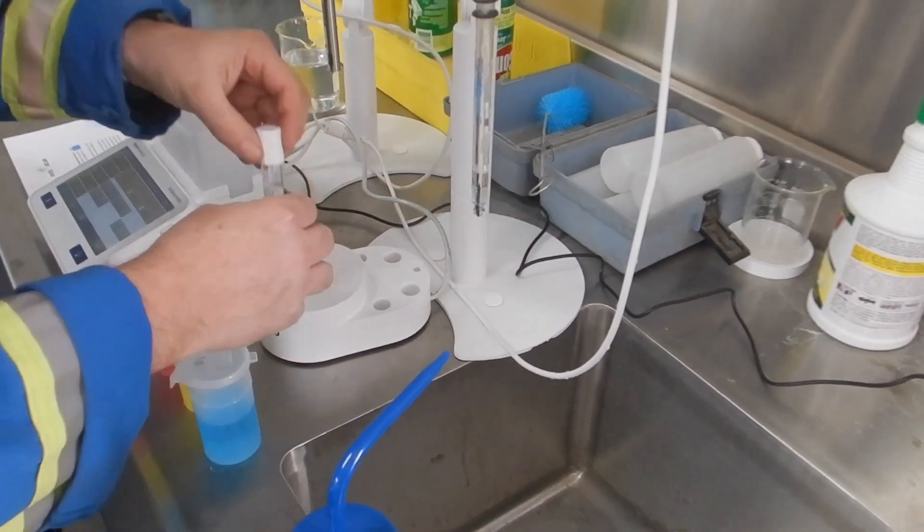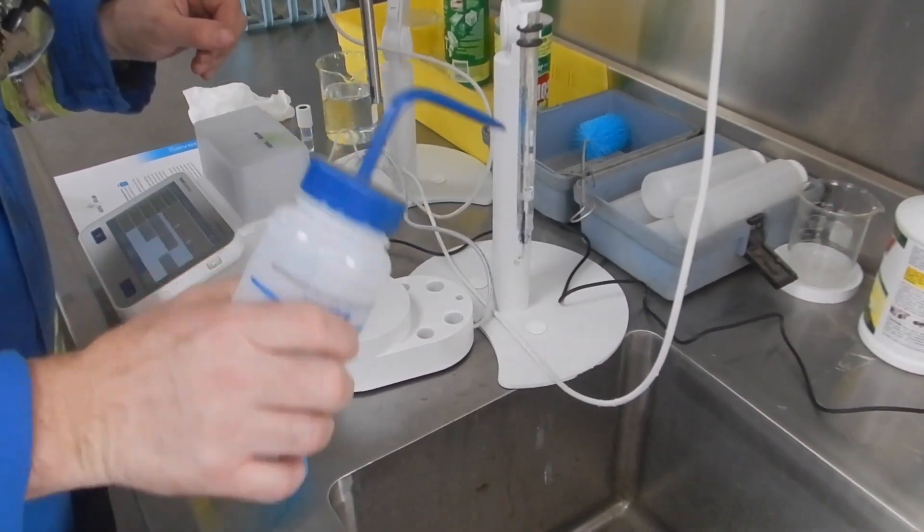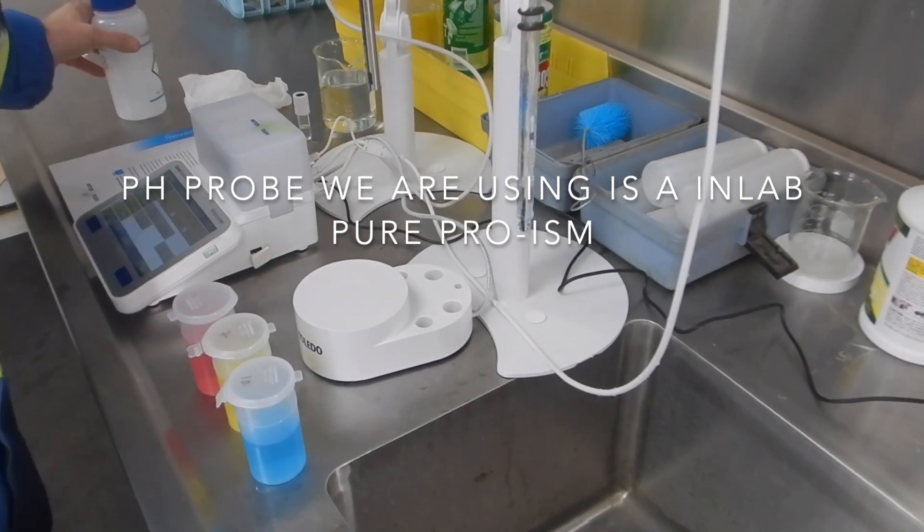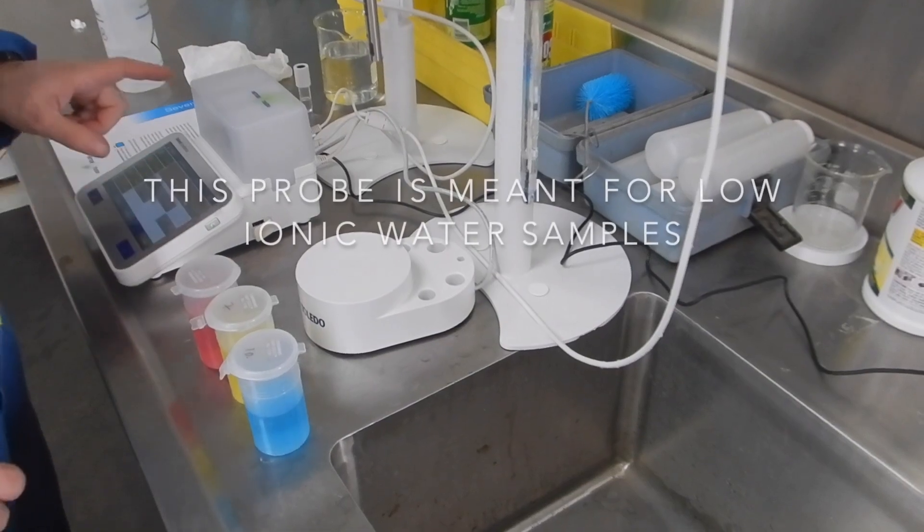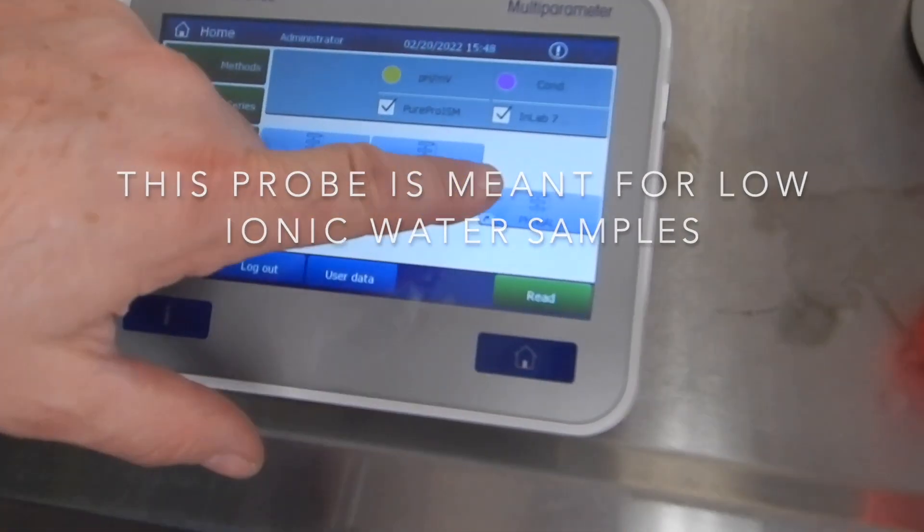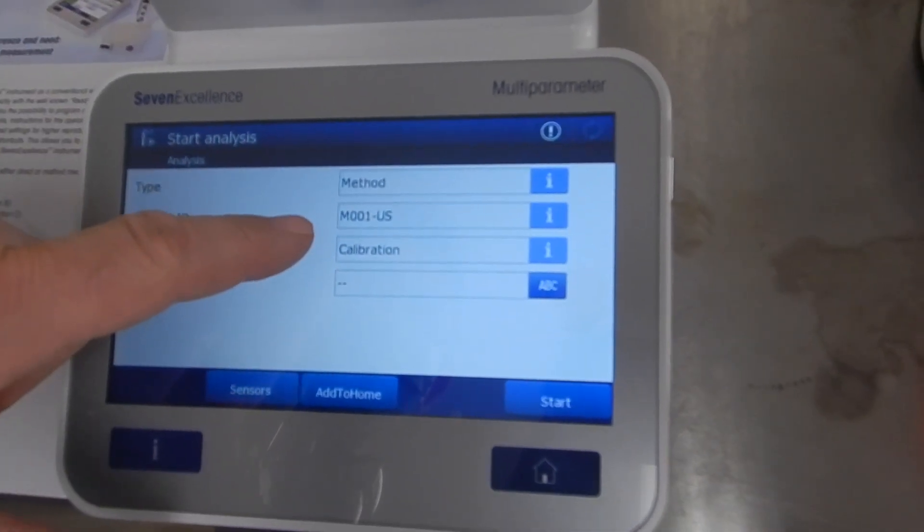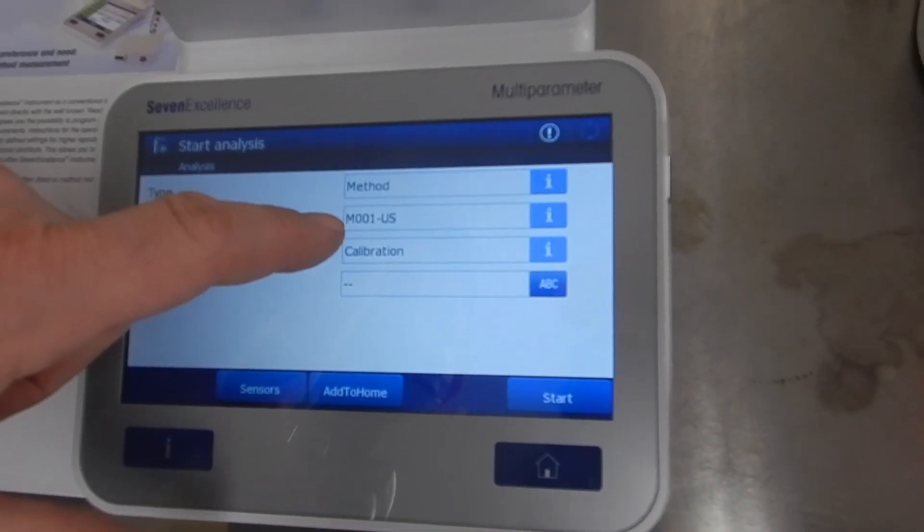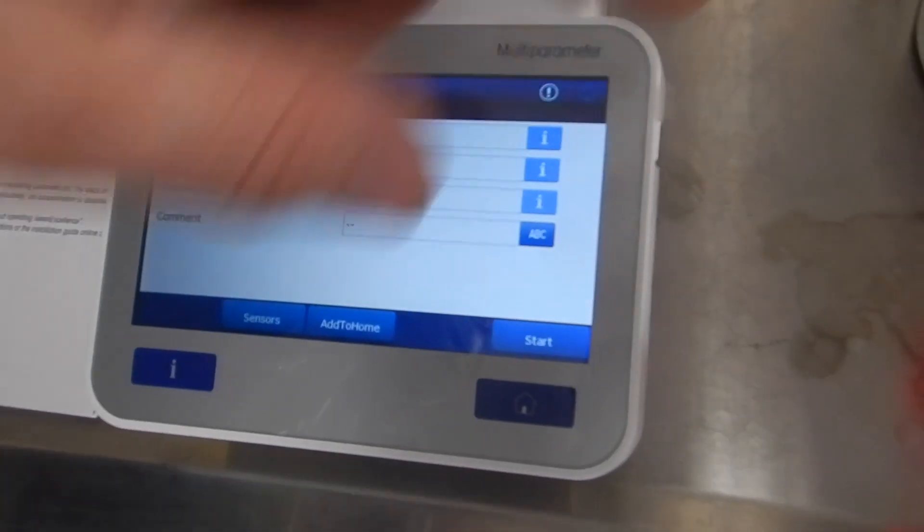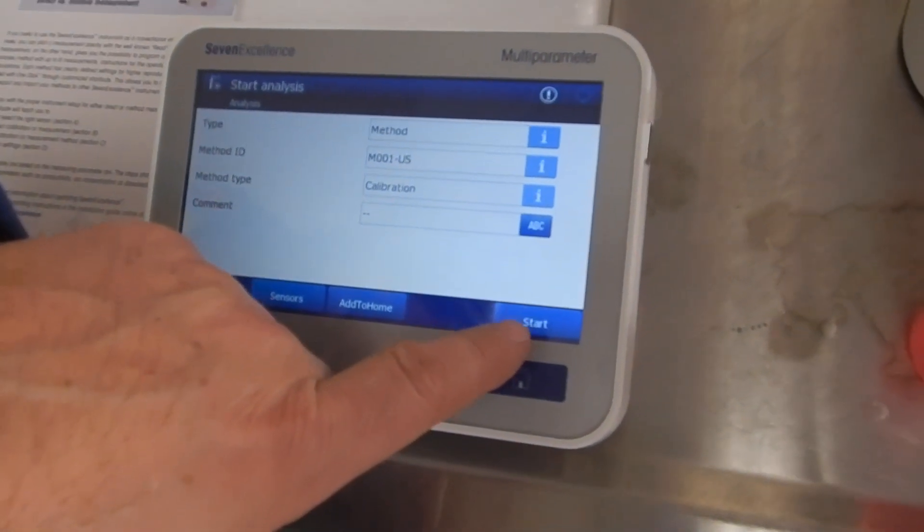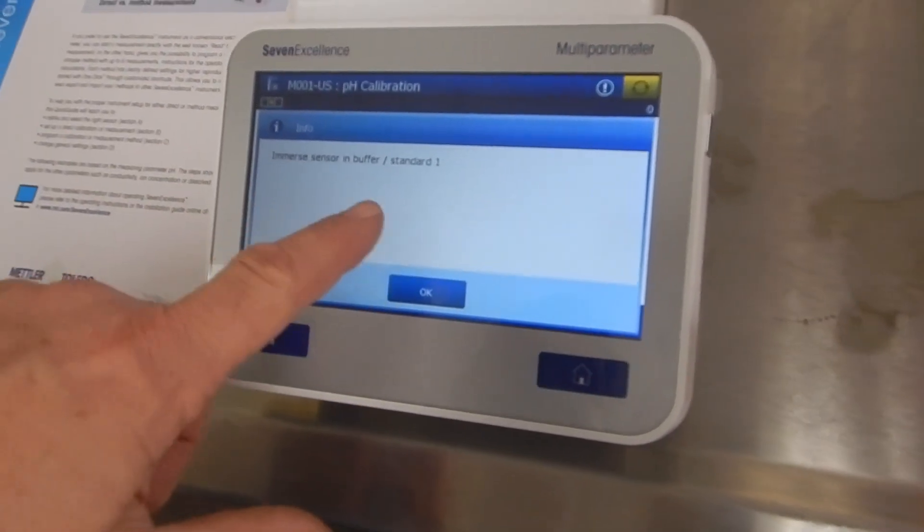Keep the probe moist and in good condition. Rinse it off and we want to push the pH cal button. We're looking for M001-US which will take the standards that we here in North America use. It's asking for your standard one.